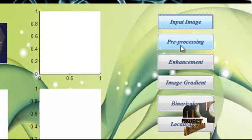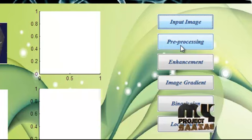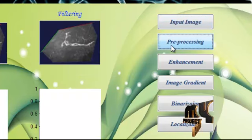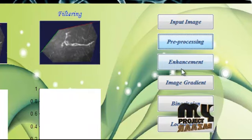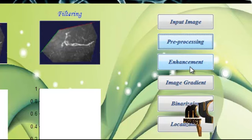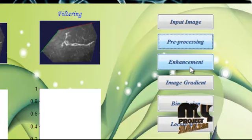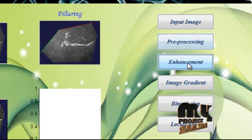The provided image is passed to the pre-processing stage. In pre-processing, we remove the Gaussian noise from the original image. The noise-free image is displayed in the second axis. The noise-free image is then passed to the enhancement stage, where we enhance the intensity level of the input image using morphological operations such as top hat and bottom hat functions. The enhanced image is displayed in the third axis.